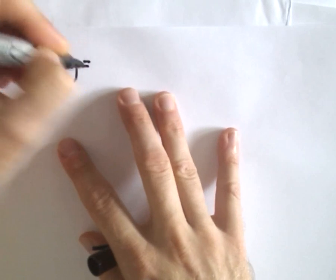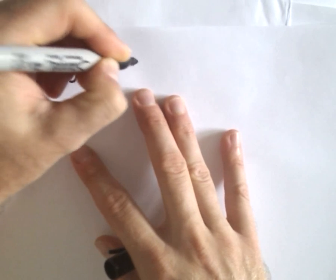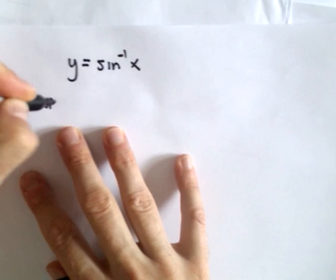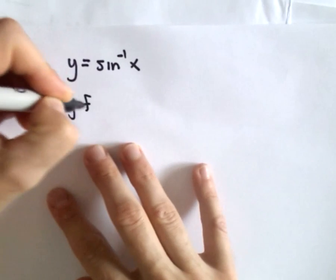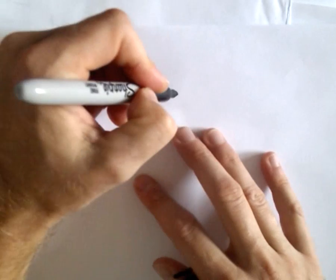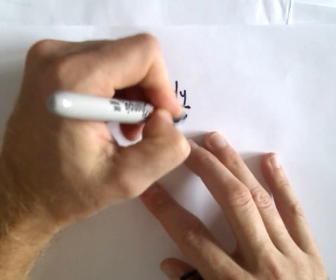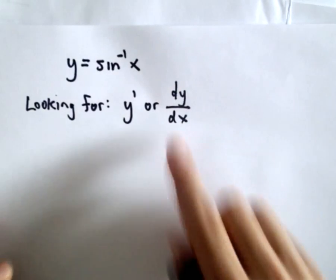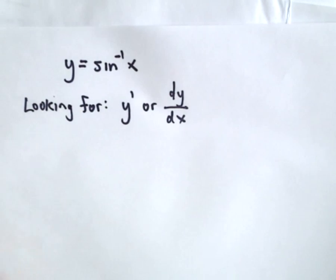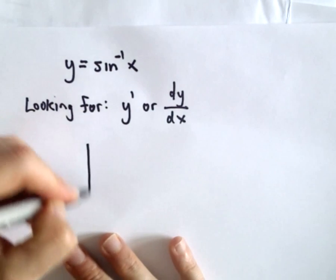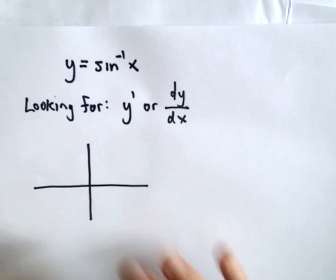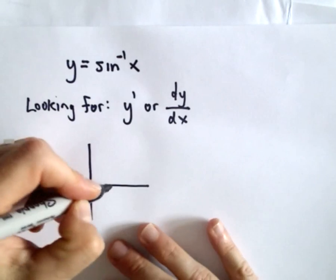So suppose we've got the function y equals inverse sine of x. What we're looking for — we want the derivative, which we can write as dy over dx, or y prime. That's what we're looking for, just the derivative. I'm going to start off by thinking about the graph of inverse sine, and to get inverse sine I always think about sine first.